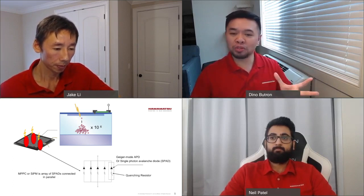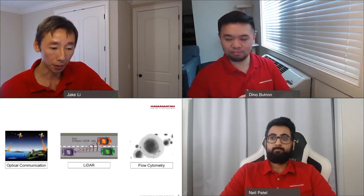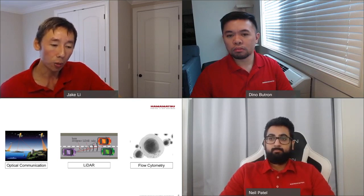Silicon photomultipliers or SiPMs were developed to have many SPADs in parallel to detect multiple photons simultaneously. PIN diodes and avalanche photodiodes are very traditional solid state detectors with a long usage history, being used in applications like short-range or medium-range LiDAR, optical communication, and flow cytometry — basically any application where a sufficient amount of photons are present. People are now very excited about silicon photomultipliers and SPADs. What really makes them so special?